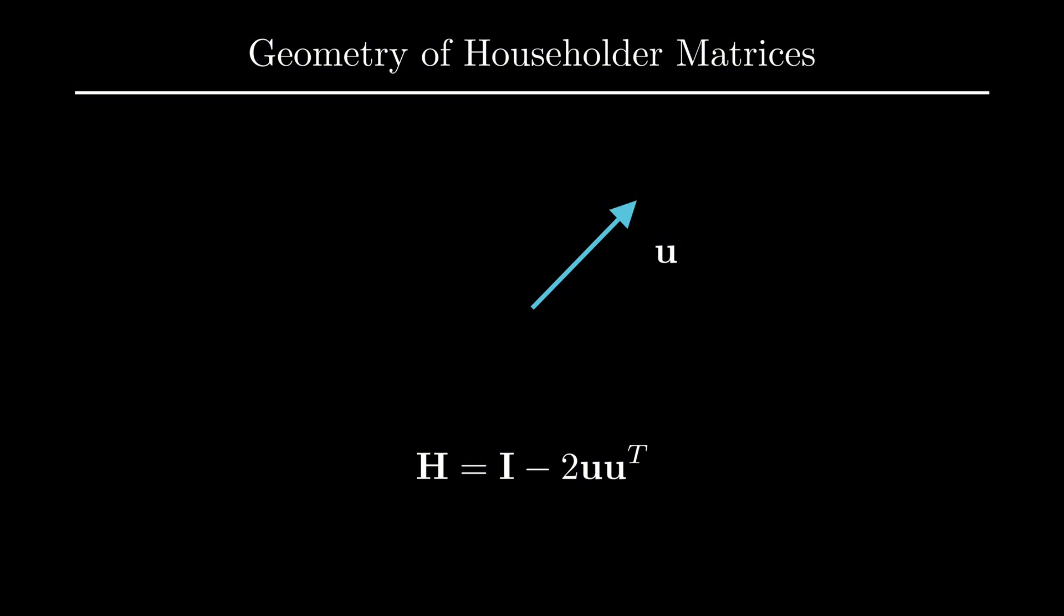Now if we treat this Householder matrix like a function and multiply it by any other 2D vector, say this vector v, what we're simply doing is reflecting this vector v across the perpendicular axis of our unit vector. Hence why these matrices are known as Householder reflection matrices.